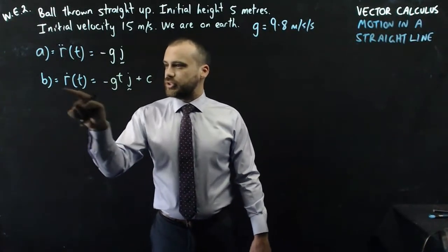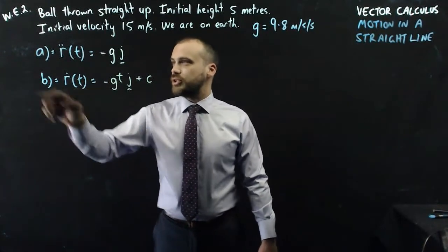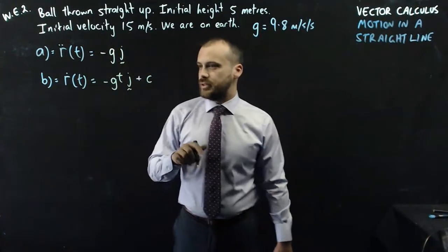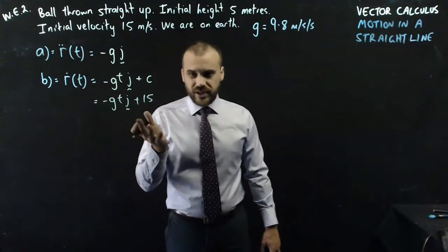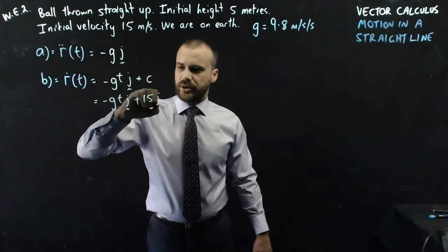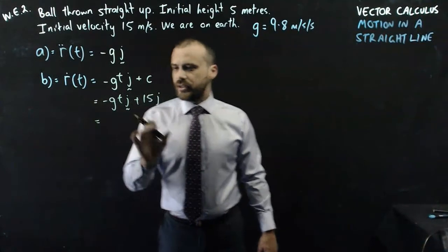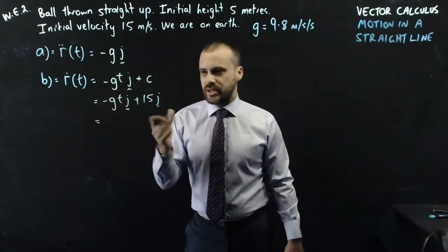Now what is the plus c in this case? Well, we're looking at a velocity function. And our initial velocity was 15. So I can replace this with 15, but not just 15, 15 in the j component. And finally, I can push these two together.